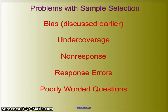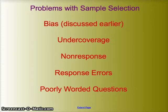For example, tending only to get views of a certain segment of the population, tending only to get views of those with strong opinions, tending only to get old, only to get young, only to get men — those all create bias. What we're trying to do in a good random sampling methodology is avoid that. Even if we attempt to draw a good random sample, there can be problems that create bias.